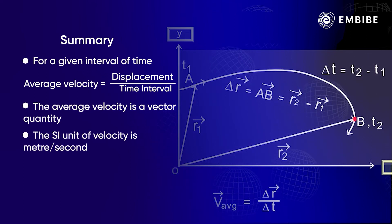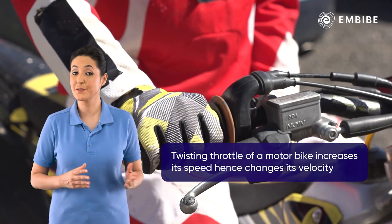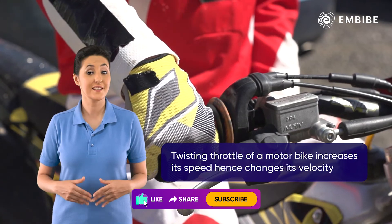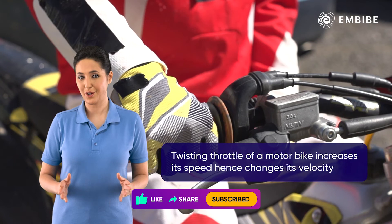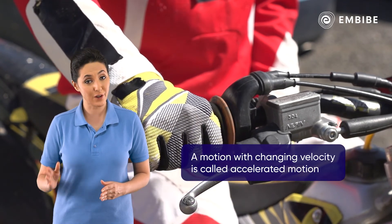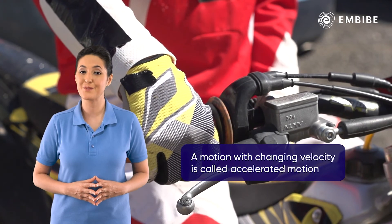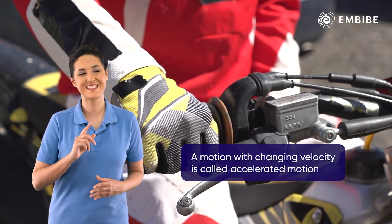Twisting the throttle of a motorbike increases the speed of the motorbike. When the speed increases, its velocity also changes. Such a motion of an object where the velocity keeps on changing is called an accelerated motion. To learn more about accelerated motion, stay tuned.